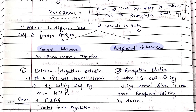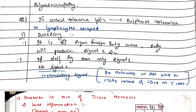Next is peripheral tolerance. The first mechanism is anergy. We know that when a foreign body is encountered, we get two signals: Signal 1 and Signal 2. APC presents antigen to T cell, and then B7 on APC binds to CD28 on T cell. But in anergy, the co-stimulatory Signal 2 is blocked — B7 on APC binds to CTLA-4 instead of CD28, so Signal 2 is blocked.